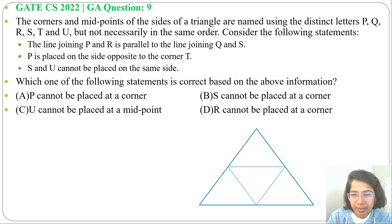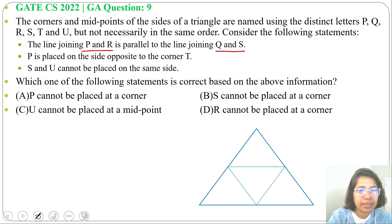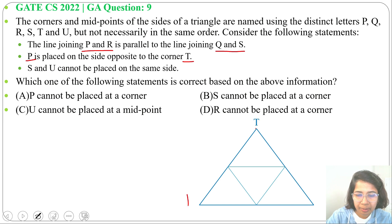Now we'll assign letters to corners and midpoints based on the three statements. Second statement: P is placed on the side opposite to the corner T. So if one corner is T, then P is placed opposite to it — P can be either of the two positions on that opposite side.